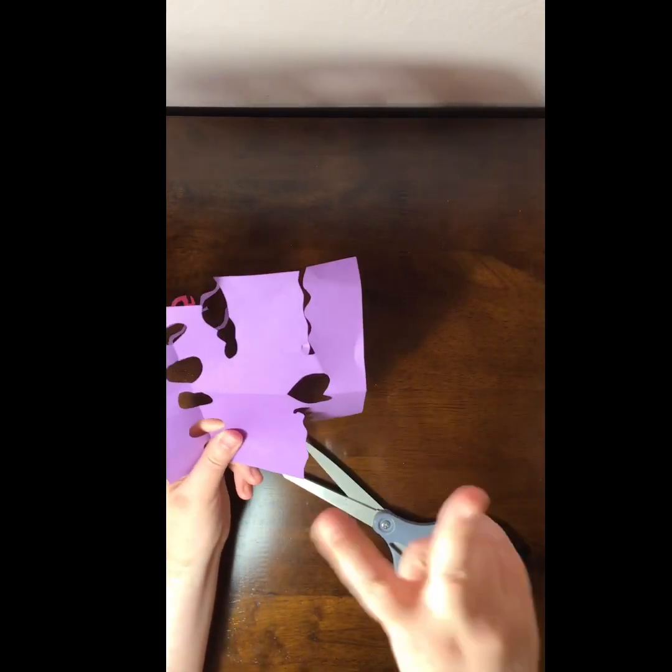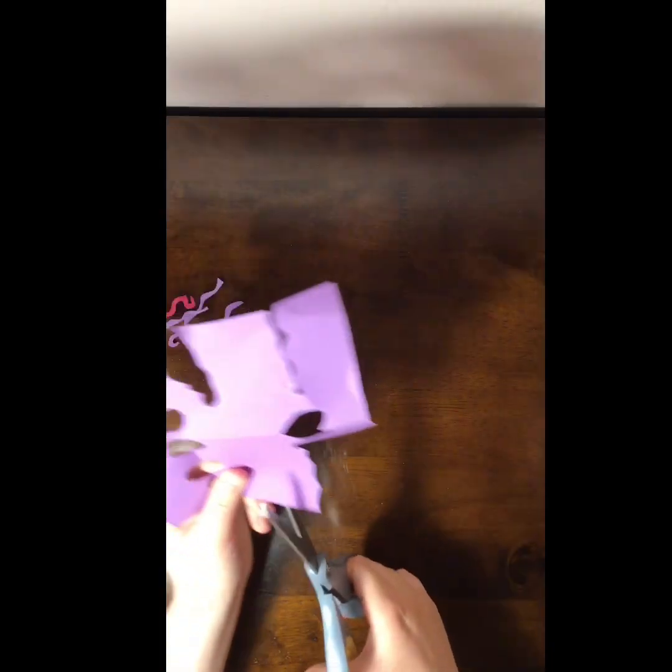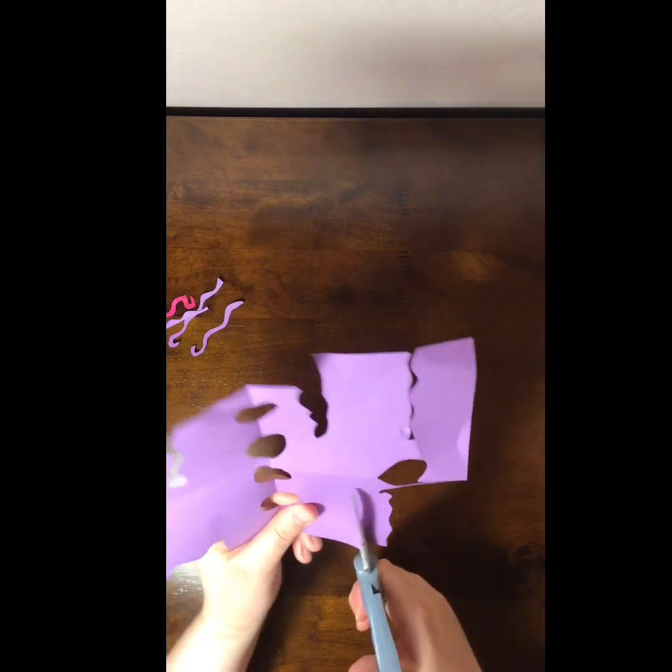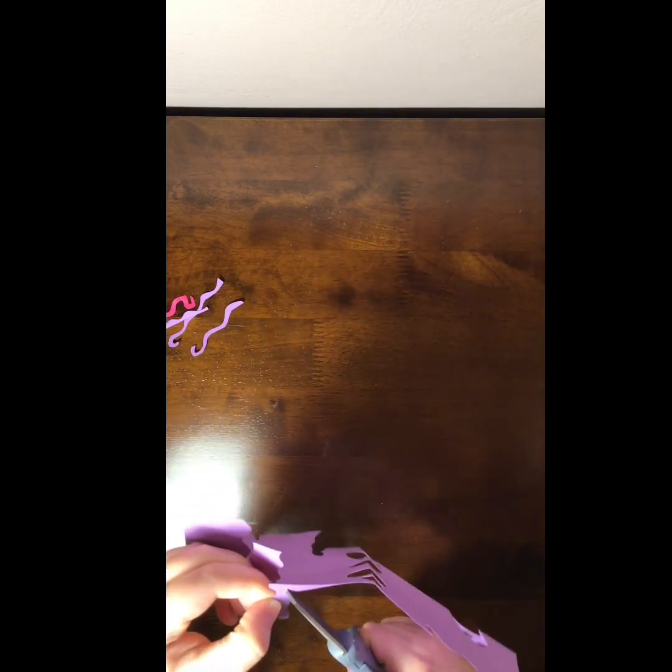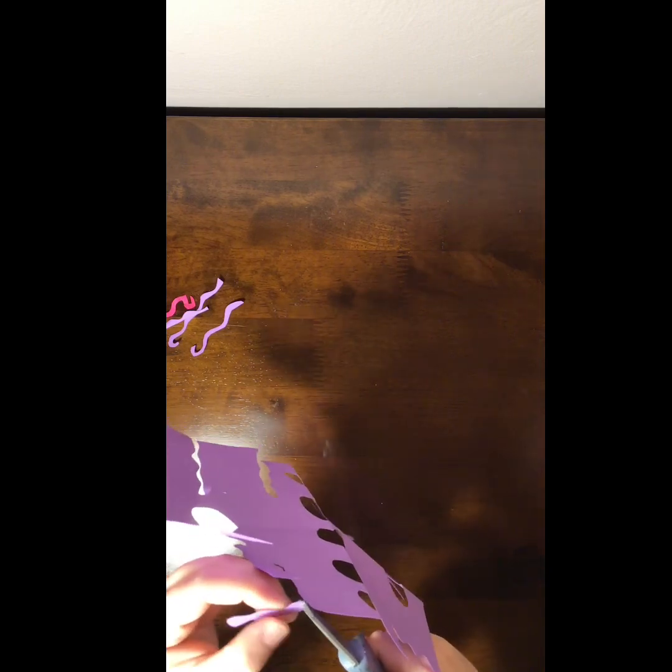But there's another kind of tentacle that I did that doesn't look like a squiggly line so much. It looks more like a caterpillar or maybe a hot Cheeto. So you're going to take your scissors and you're just going to do like a caterpillar shape if you want this kind of tentacle. If you want to stick with the squiggly lines, that's totally fine too. It's all about what you prefer.